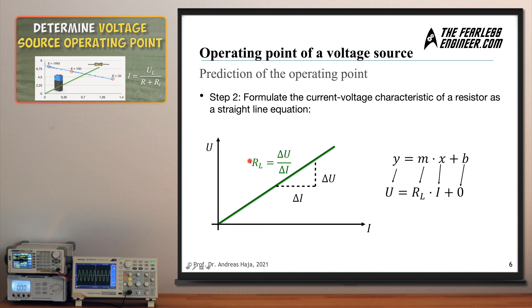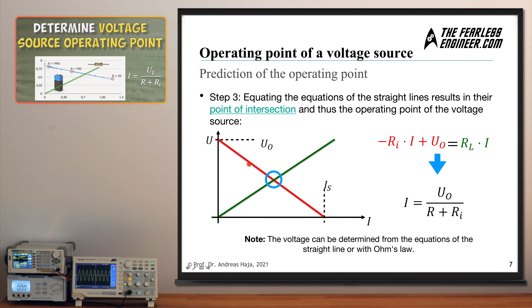In step two, we do the same for the current-voltage characteristic of the ohmic load resistor. An ohmic resistor that does not change its resistance with current flow produces a straight line emanating from the origin, going from lower-left to upper-right with a constant positive slope. The slope is determined by dividing voltage drop by current flow. In the standard equation form, y corresponds to voltage, x corresponds to current, the slope is the positive load resistance, and the b parameter is zero since the line passes through the origin.